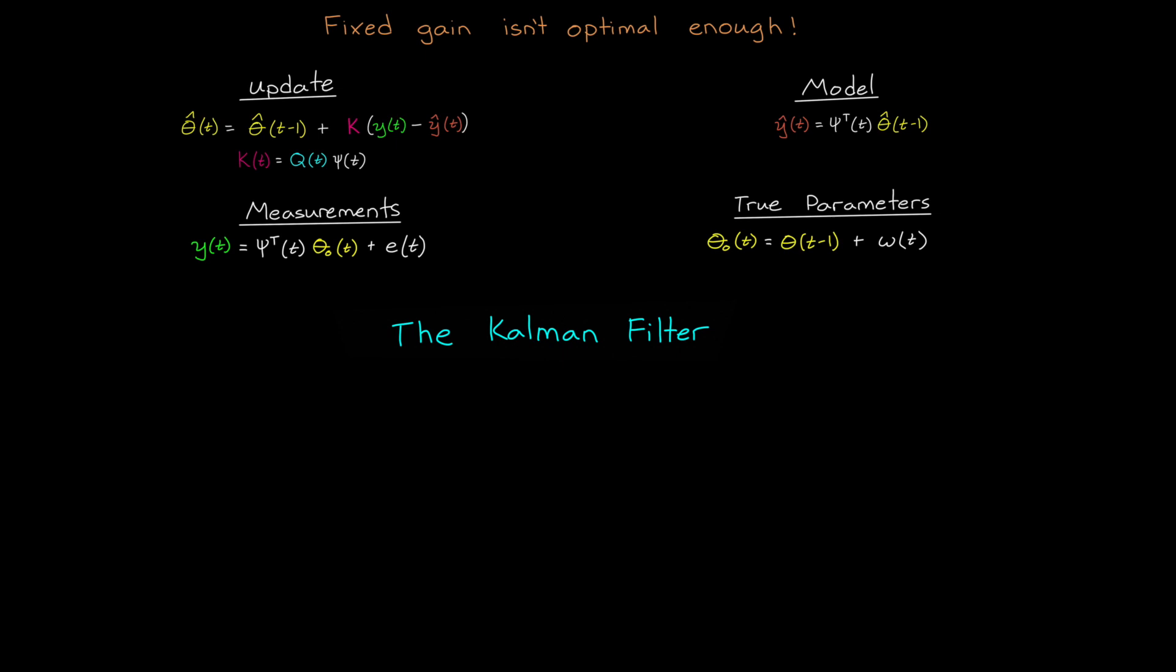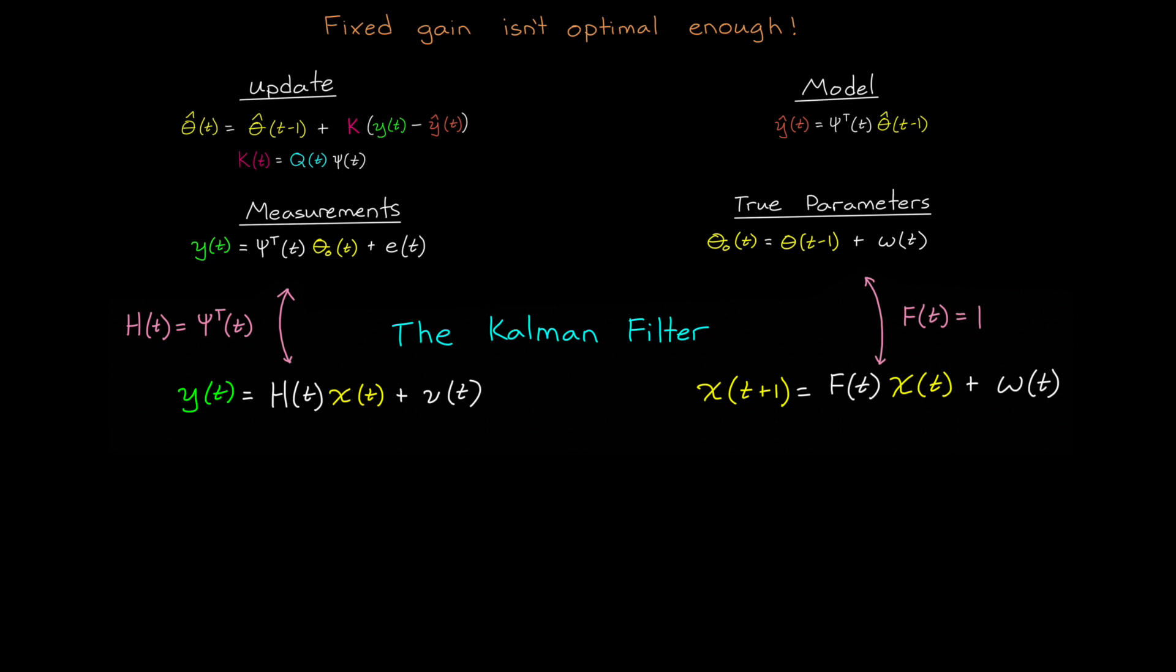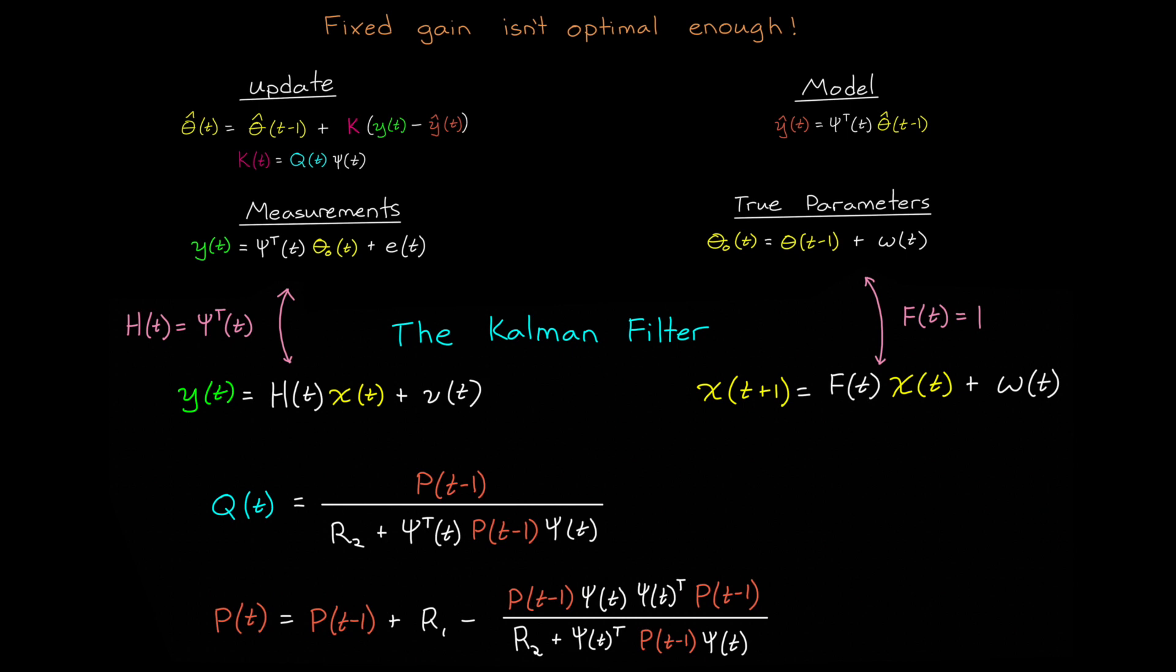In fact, we can actually just use a Kalman filter to solve this problem. A Kalman filter estimates the state of the following standard format linear system, which, if we look closely, we can see that they exactly match our measurement and parameter models, if f of t is set to the identity matrix and h of t is the regression vector.